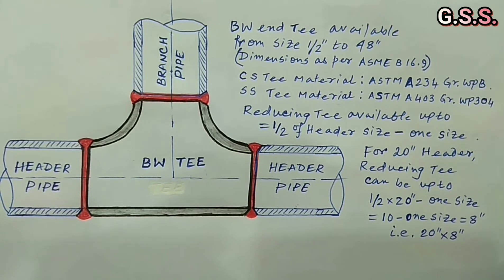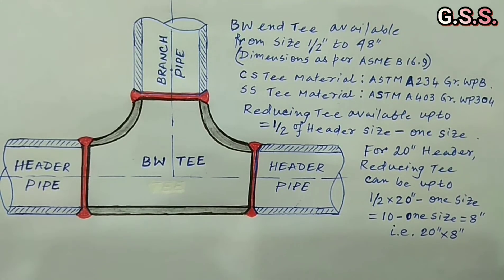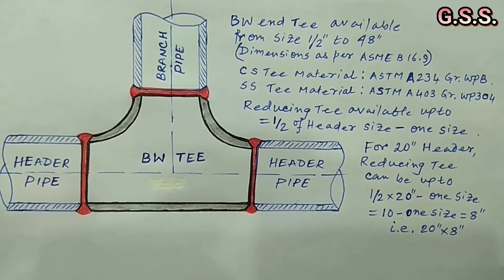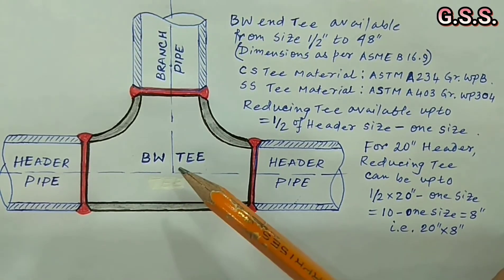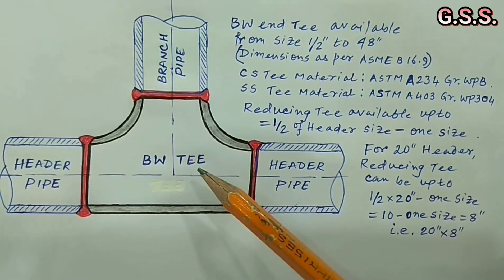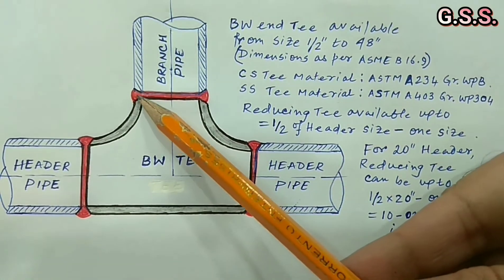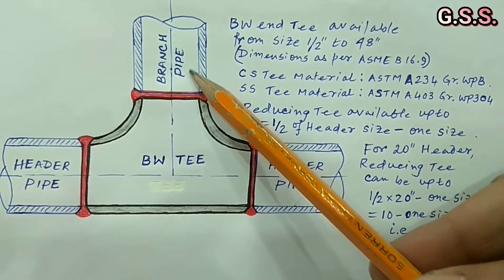If we want to have 48 inch by 16 inch branch connection and we cannot replace the T by direct branch connection, then we have to go for a T and a reducer. Say 48 inch by 24 inch T and 24 inch by 16 inch concentric reducer.